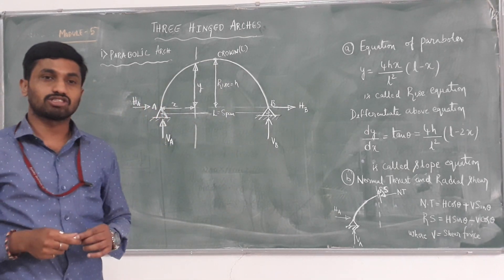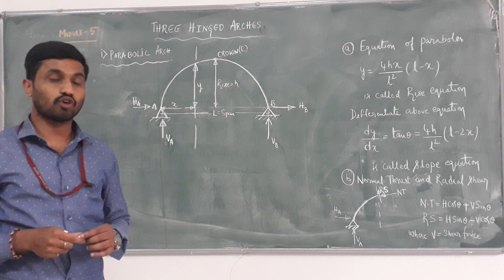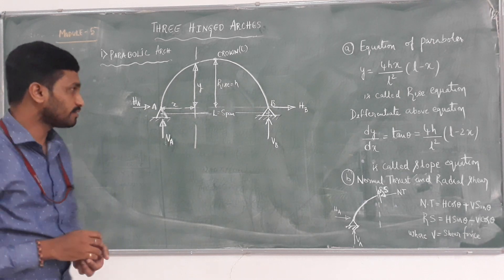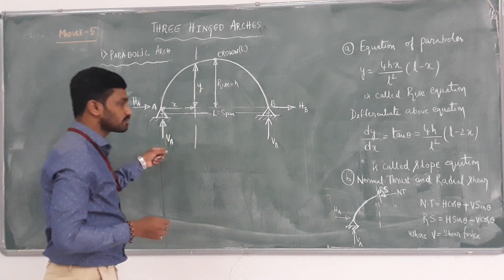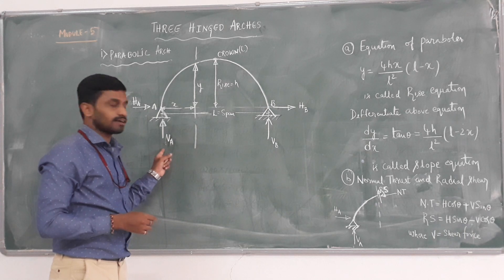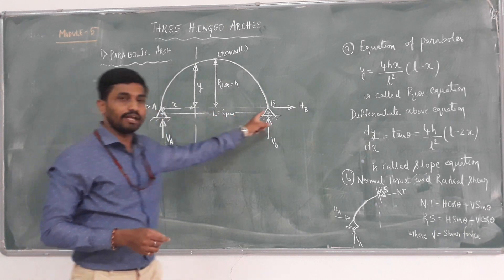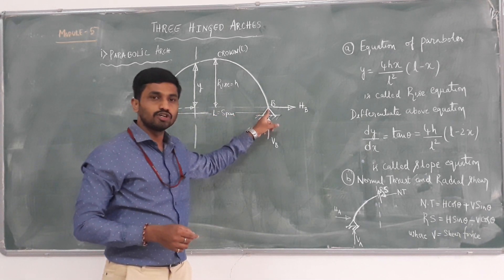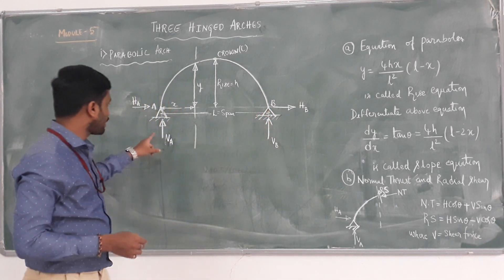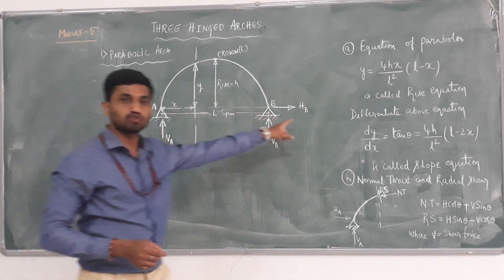In three-hinged arches, the basic steps involved to solve problems are: in step 1, we are determining the external support reactions. As I said, there is A and B having hinged supports. So in first step, I am going to determine VA, HA, HP and VB.